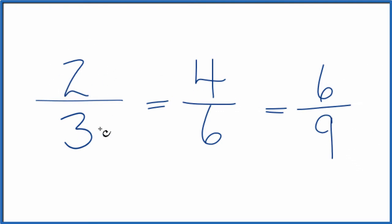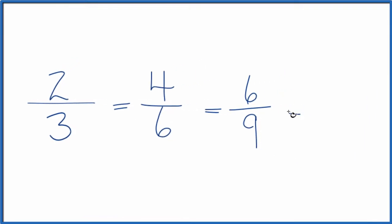Let's multiply the numerator and denominator by 4. 2 times 4, that gives us 8. 3 times 4 is 12. And that is another equivalent fraction for two-thirds.